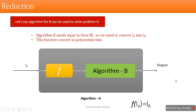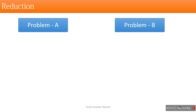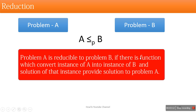Since we already have algorithm B available, instead of writing a new algorithm for A, we use algorithm B and simply convert the input into the format of algorithm B. This is related to reduction. We can say problem A is reducible to problem B in polynomial time if there is a function which converts an instance of problem A into an instance of problem B, and the solution of that instance provides the solution of problem A.